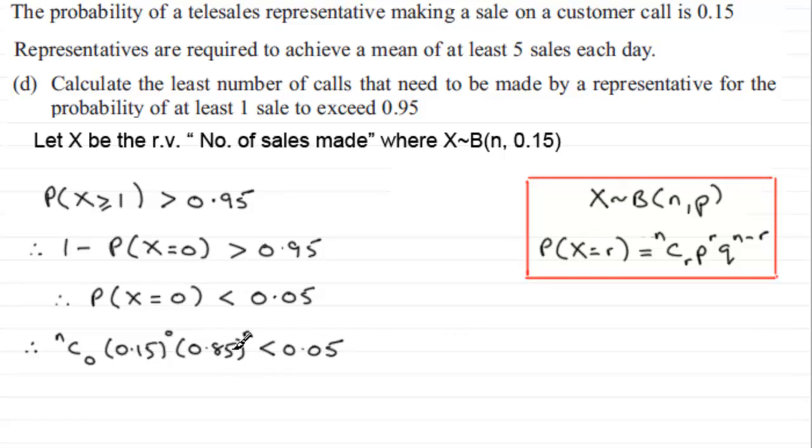Effectively what we've got is essentially n failures. So that's why you're just left with 0.85 to the power n, because nC0 is 1, 0.15 to the power 0 is 1. So we therefore just have 0.85 to the power n has to be less than 0.05.